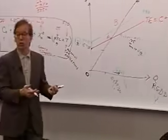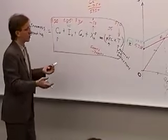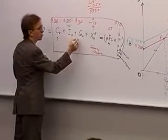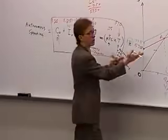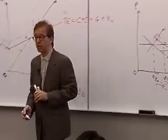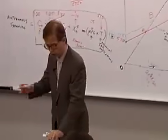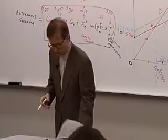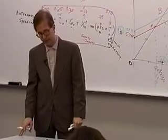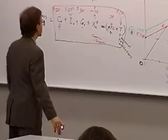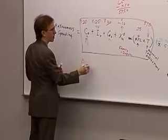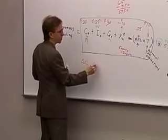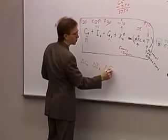What we're trying to understand is what's going on with aggregate demand. It could have been government spending or autonomous consumption rising by $20 and we'd have had exactly the same shifts and the same result with respect to equilibrium income. What caused these shifts? Changes in autonomous consumption, autonomous investment, and so forth.